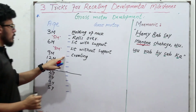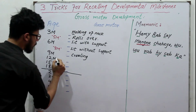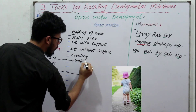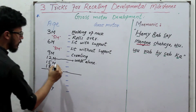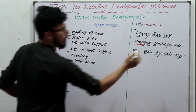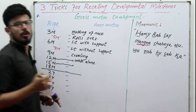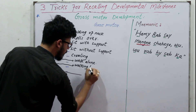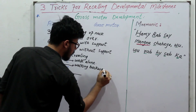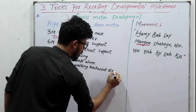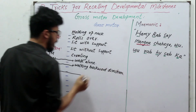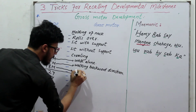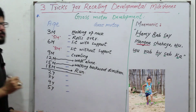After S there is C, so at nine months there is crawling. After C there is W, so at twelve months there is walking alone. At fifteen months there is again W — walking in a backward direction. After W there is R, so at eighteen months there is running.